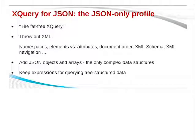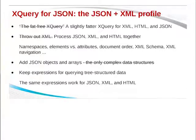We add in JSON objects and arrays — that's the only complex data structure you need — and you keep the expressions for creating pre-structured data. We have another profile that has both XML and JSON, which is no longer XML-free. XQuery is designed as a data integration language for more than one kind of data. Some of the languages that helped inform it were languages for operating on views of different things to create concrete results, and that's one of the reasons it can be implemented in so many different environments.